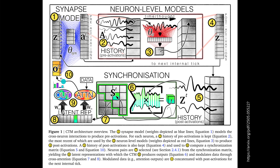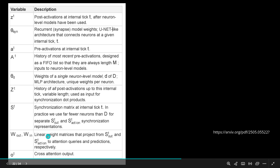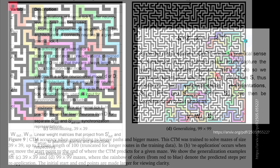Then the cycle starts again. Reading the paper for the very first time, I'm not fully confident I understand this model. For those wanting to look at the mathematics in those 60 pages: the key variables include post-activation at tick t, recurrent synapse model weights, pre-activation at tick t, history of most recent pre-activations, single neuron-level model weights, history of all post-activations, the synchronization matrix, and the linear weight matrix projecting from the synchronization matrix to attention queries and predictions, plus the cross-attention output.